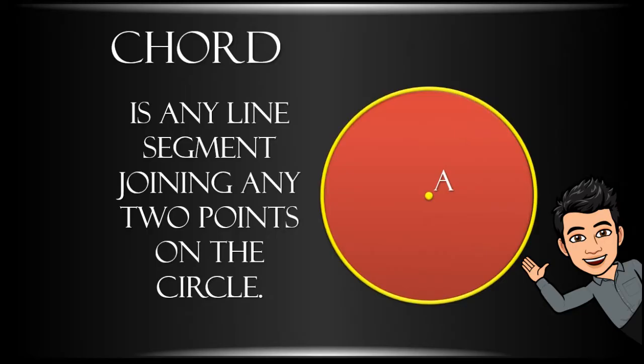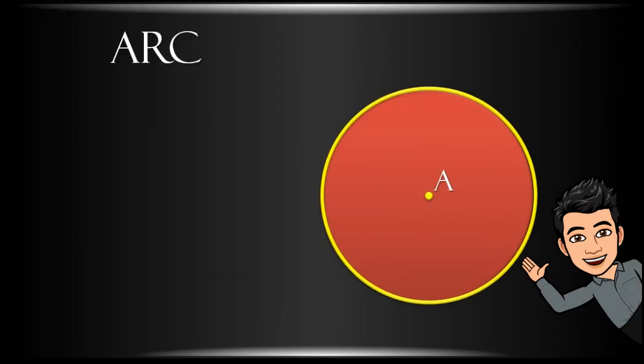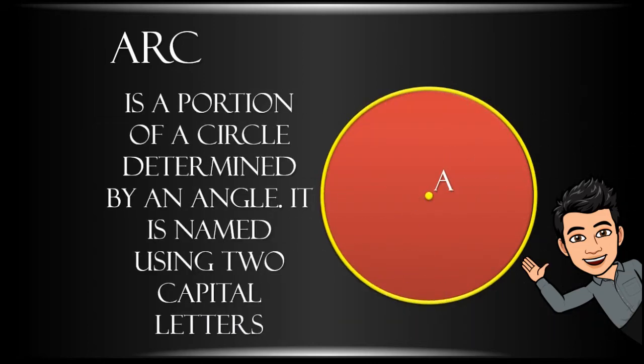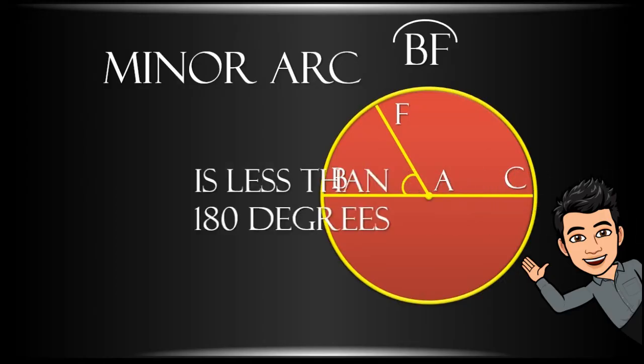An arc - it is any portion of a circle determined by an angle. Arc BF is an arc of circle A. A minor arc - arc BF is a minor arc since it measures less than 180 degrees.